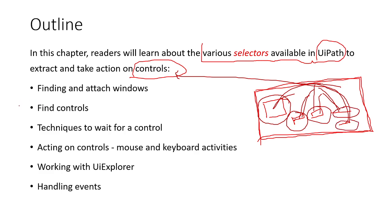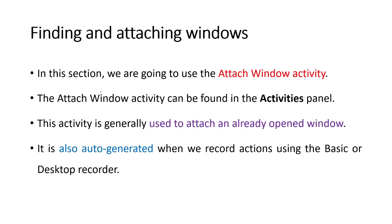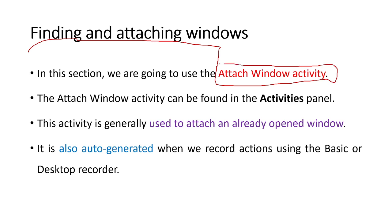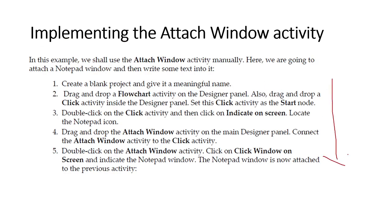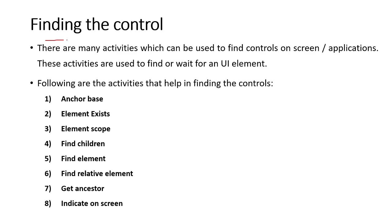We already started this journey and learned how to find and attach windows — for example the notepad example from the last class. We can attach different windows depending on the requirement, and the activity used to attach a window is the Attach Window activity. We already used this activity in the last class to demonstrate how to attach windows and find UI elements.